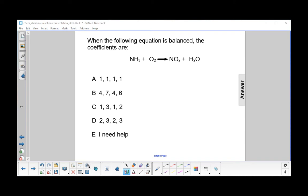When the following equation is balanced, the coefficients are... Let's start by writing down the various elements: nitrogen, hydrogen, and oxygen. We start on the left side with one nitrogen, three hydrogens, two oxygens.